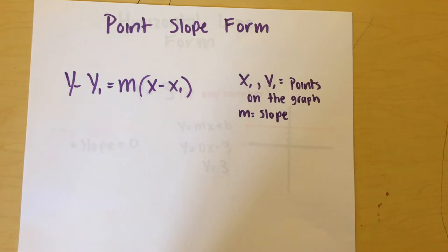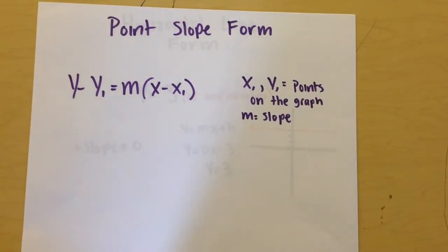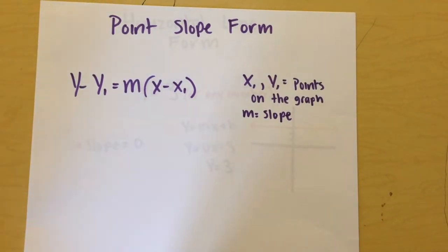Point-slope form is another way to express linear equations. It is listed as Y minus Y1 equals M times X minus X1.